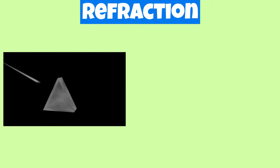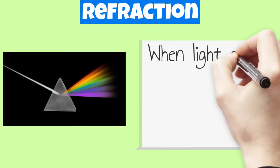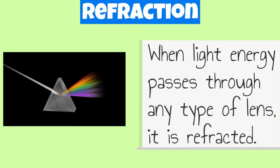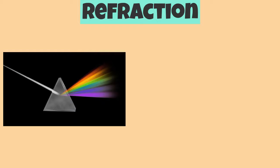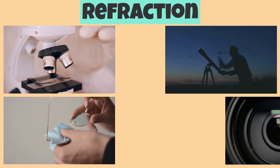For example, a prism is a uniquely cut piece of glass that refracts white light into its individual colors. When light energy passes through any type of lens, it is refracted. Some objects that refract light include microscopes, glasses, telescopes, and camera lenses.